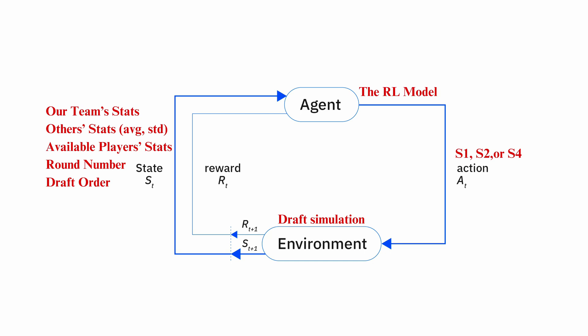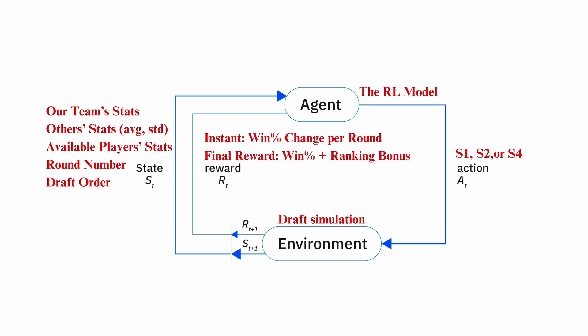For the reward, the instant reward is the change of winning percentage per round, and the final reward is winning percentage plus a ranking bonus — the better rank you are, the better bonus you get. I then trained the reinforcement learning model with 500 simulations, and ran 100 additional simulations to run regression and test if reinforcement learning really brings better performance.